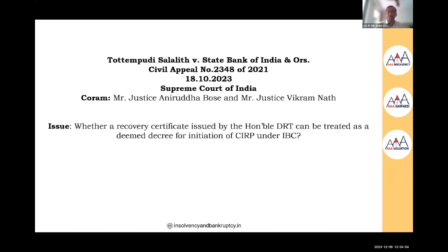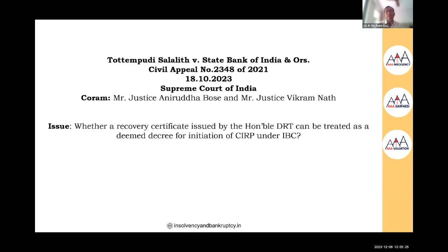On the question of Section 92 application filed before NCLT where at some stage the bank issues a publication and the Resolution Professional comes to know about the property: the RP has no power to take possession of properties, but the RP can write to the bank and approach the NCLT with respect to a violation of the moratorium.